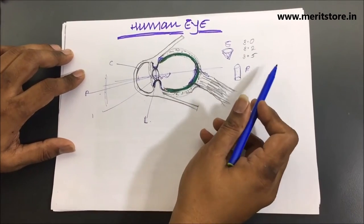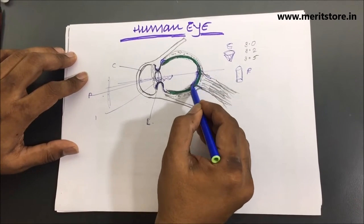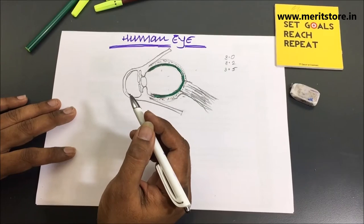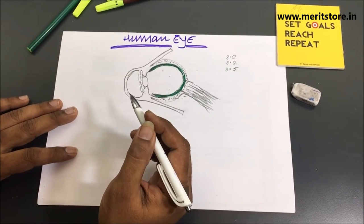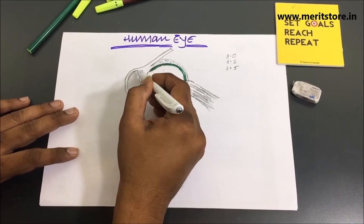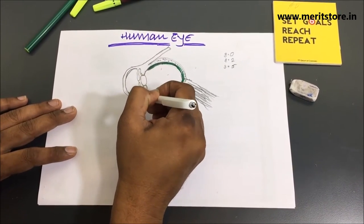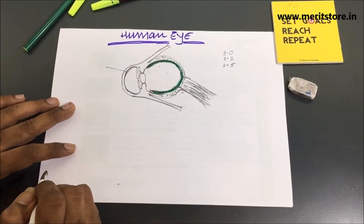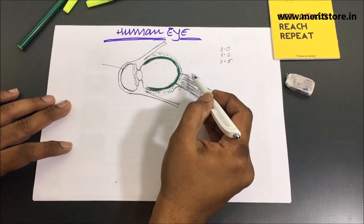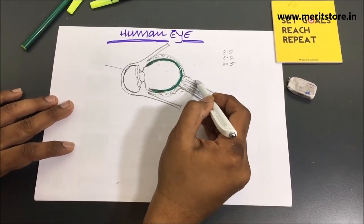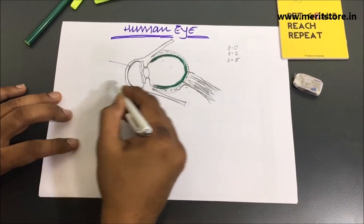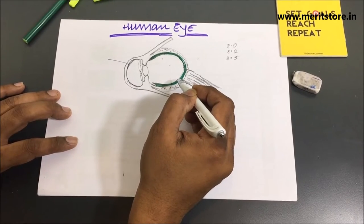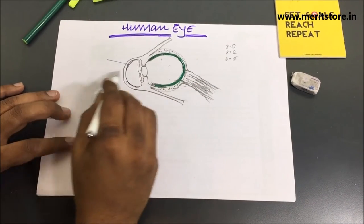Where the optic nerve and fibers meet the retina, if rays of light hit that region, no image is formed in the brain — that is called the blind spot. The human eye has a thin membrane called the cornea, which is ahead of the eye. Light enters the human eye through the cornea, and maximum refraction of the entering rays of light takes place at the cornea.